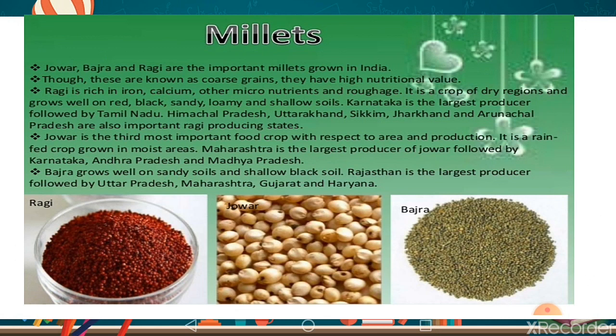Karnataka is the largest producer of millets, followed by Tamil Nadu. Himachal Pradesh, Uttarakhand, Sikkim, Jharkhand, and Arunachal Pradesh are also important ragi producing states.